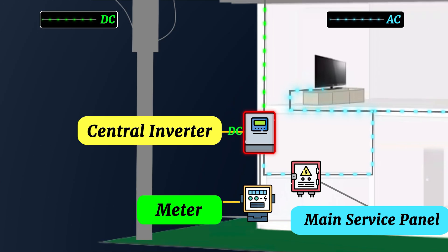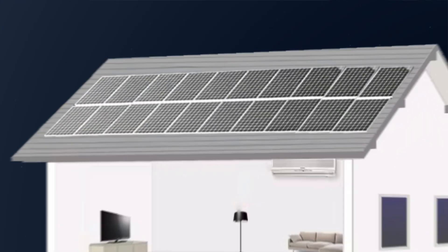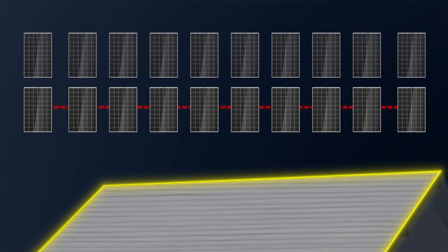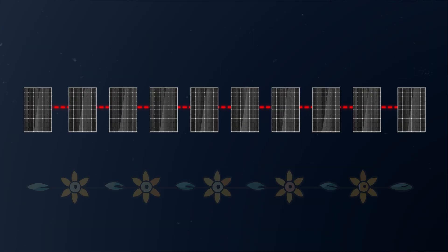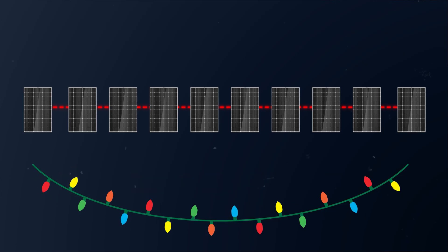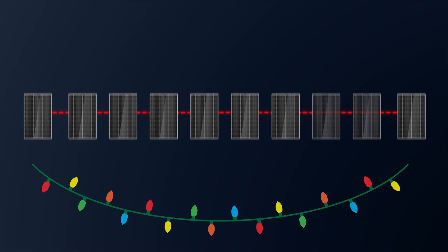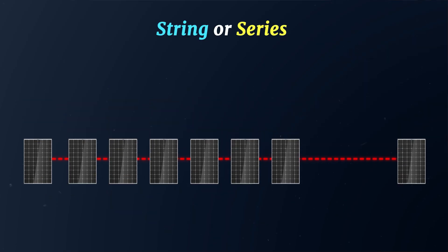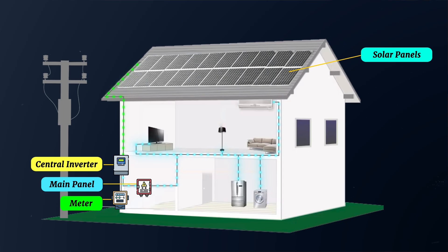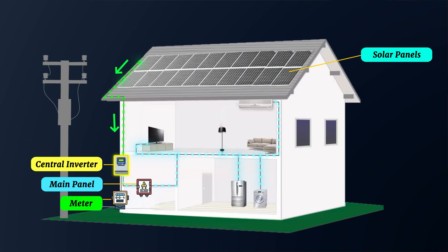There, the DC power would be converted into AC, at which point it would be fed into the main service panel to power the house. And this setup worked for many years, but it came with a drawback. You can think about the panels on the roof connected in a series, similar to a daisy chain, much like how old Christmas lights used to be wired. This series, or string as we call it, typically consists of 8 to 12 panels, and the combined power for the string is then sent down to the central inverter.